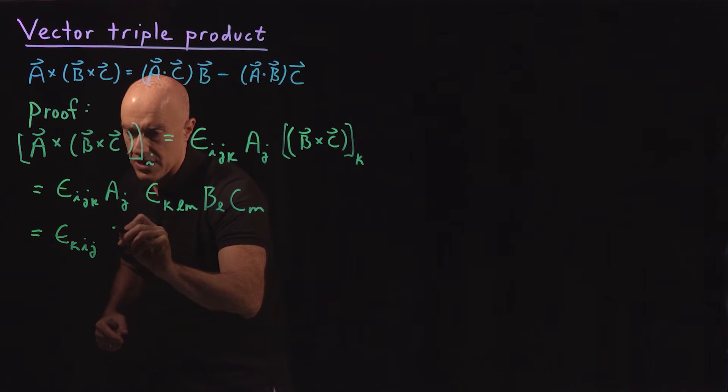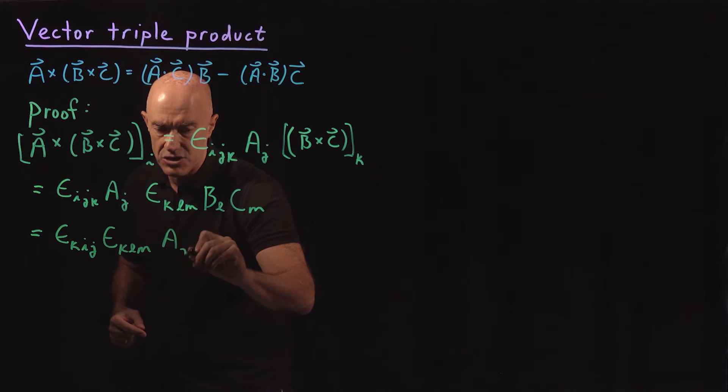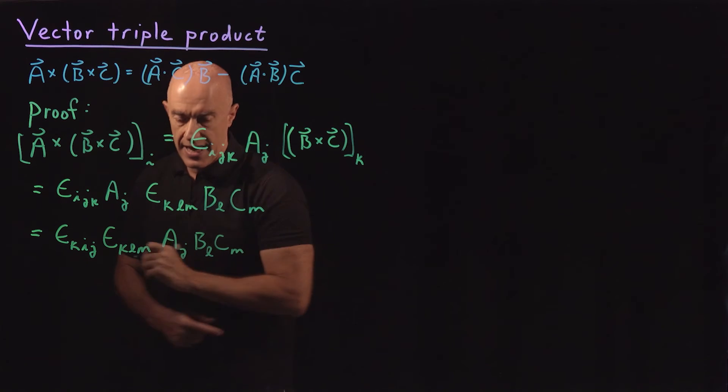And then epsilon_{k,l,m} of the second one. And then we have an A_j, B_l, C_m.